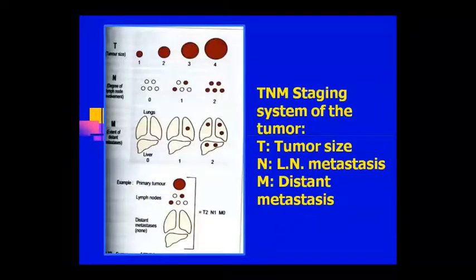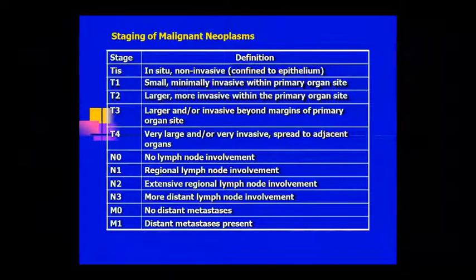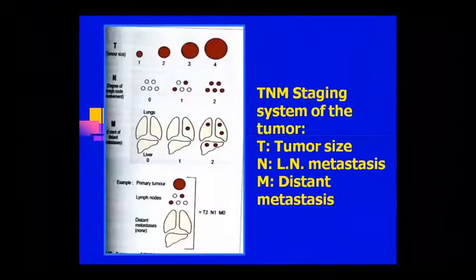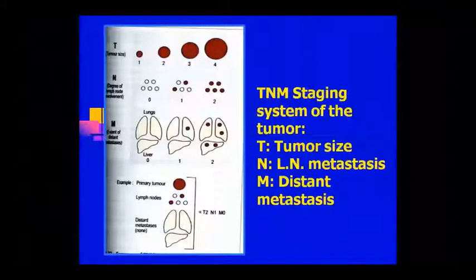This system is called TNM. The TNM staging system uses T for tumor size, N for metastasis to the lymph node, and M for distant metastasis. As shown in the diagram, look at the tumor size, the lymph node involvement, and the metastasis — see how it spreads. The primary tumor is assessed, lymph node involvement is checked, and distant metastasis is determined.